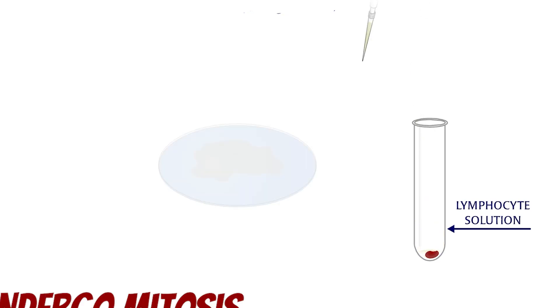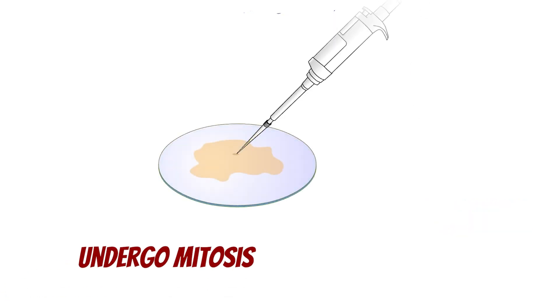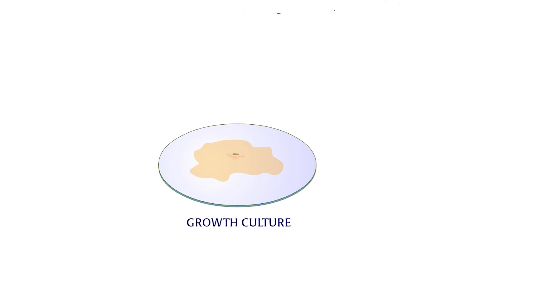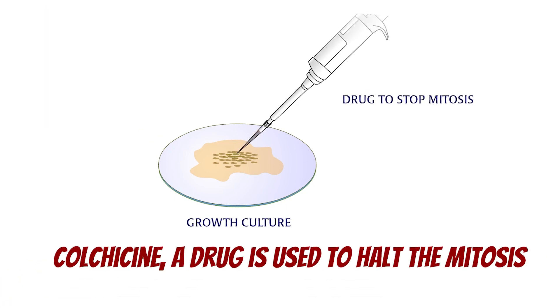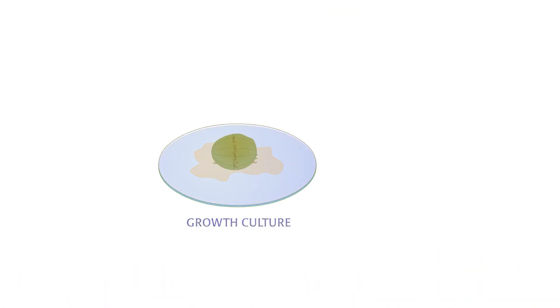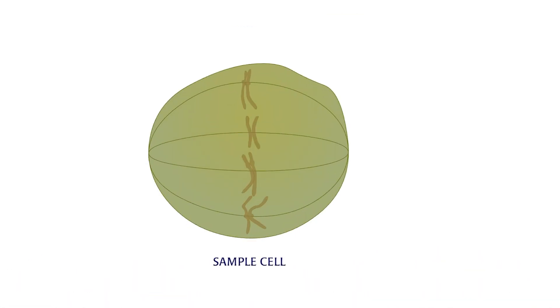Once separated, these lymphocytes are placed on a growth culture and encouraged to divide. Because dividing cells show off their chromosomes best at the mid-stage of cell division called metaphase, a drug named colchicine is added to the dividing cells to halt mitosis.